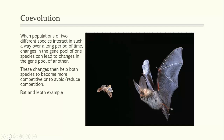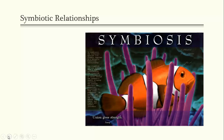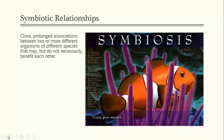Next, let's talk about symbiotic relationships — close, prolonged associations between two or more organisms of different species that may or may not benefit each member. There are three types: mutualism, where both sides benefit; commensalism, where one organism benefits and the other is neither helped nor hurt; and parasitism, where one species is harmed while the other benefits.